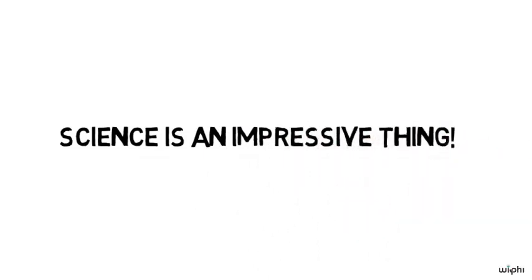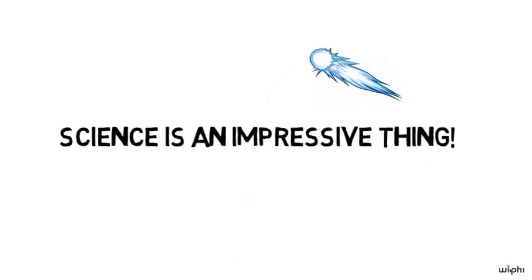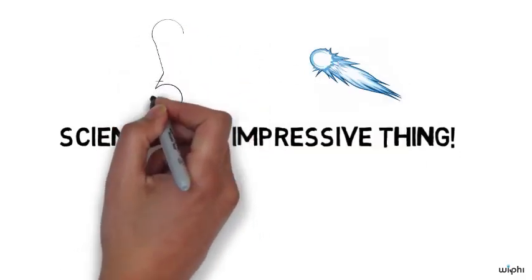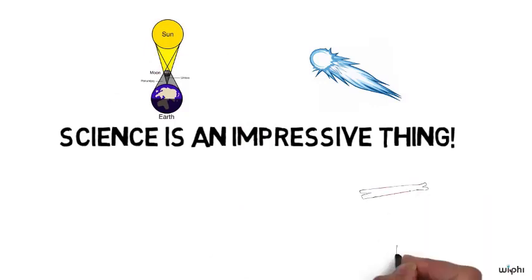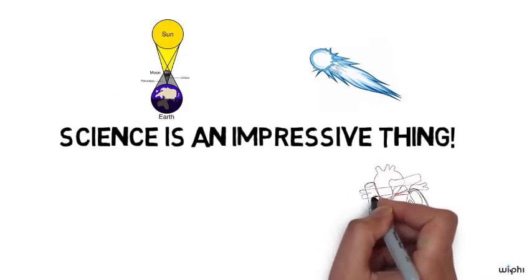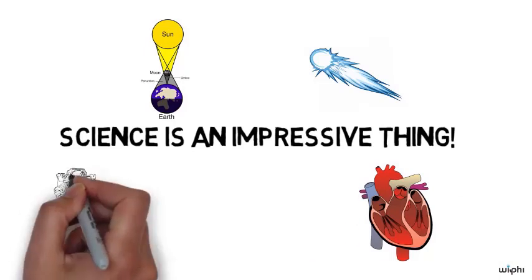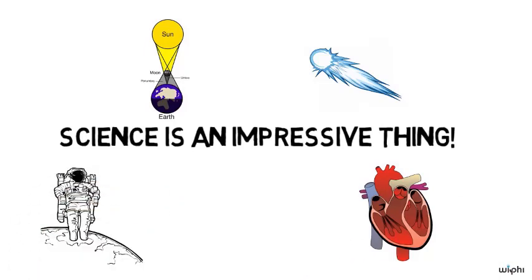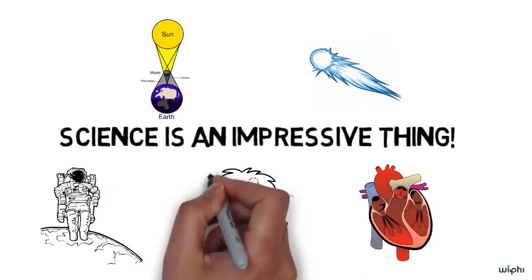Science is an impressive thing. Scientists have for hundreds of years been able to predict the movements of comets, the eclipses and the like decades in advance. In the 20th century, scientists were able to transplant hearts, to send people to the moon, and do all kinds of extraordinary things of which we can hardly even imagine what they'll be able to achieve in the 21st century.